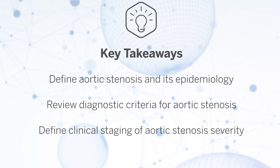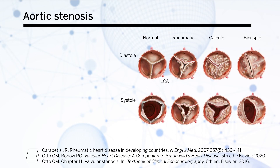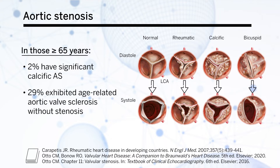As we all know, aortic stenosis is very common. About 2% of persons more than or equal to 65 years of age have significant calcific aortic stenosis, whereas about 29% exhibit age-related aortic sclerosis without stenosis.